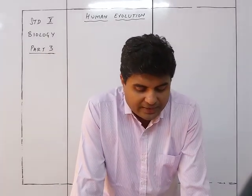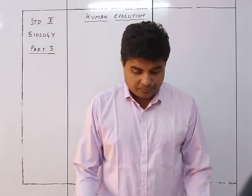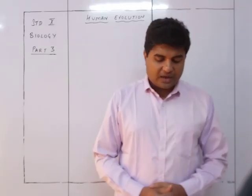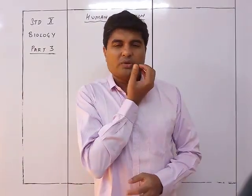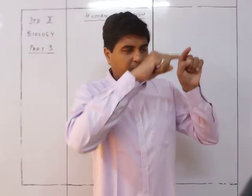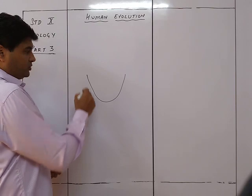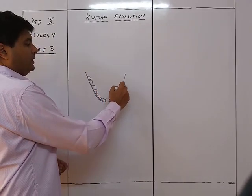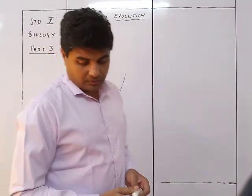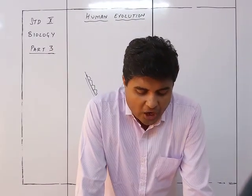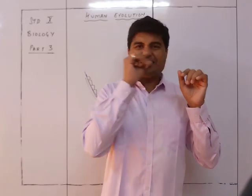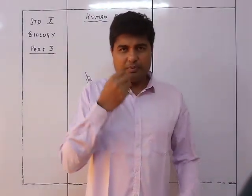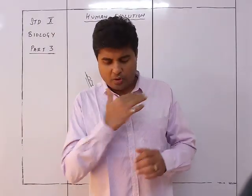Australopithecus walked nearly straight. The vertebral column had a distinct lumbar curve with a broader pelvis. The teeth were strikingly man-like because the dental arc was a smooth rounded parabola — our jaw is shaped like a parabola because the teeth are placed in that shape. The canine did not project beyond the other teeth, so the canine was within the same line.